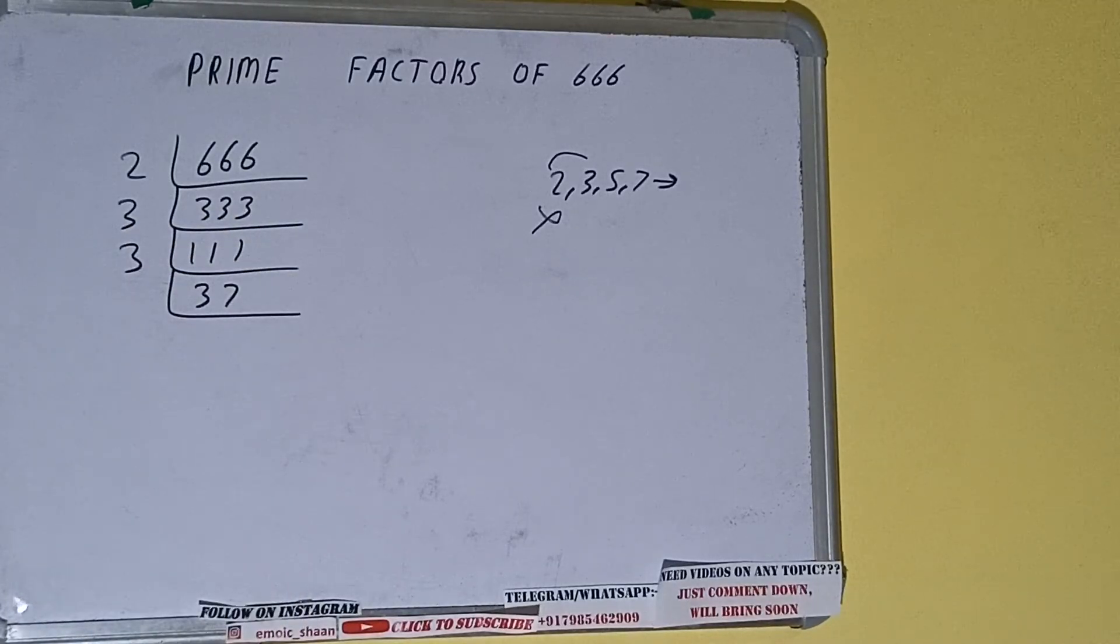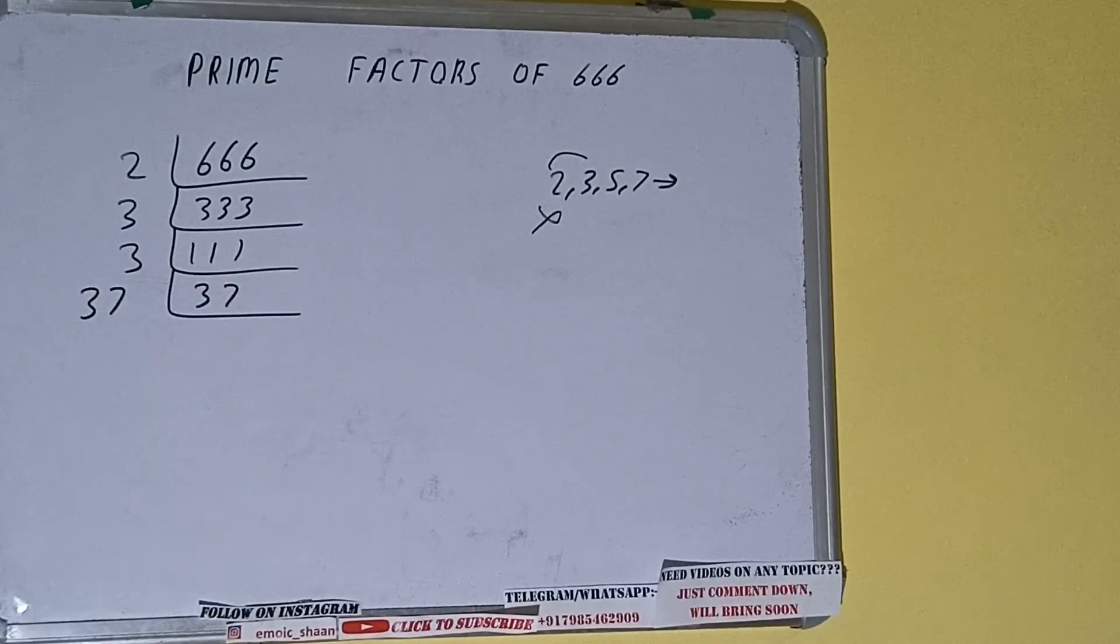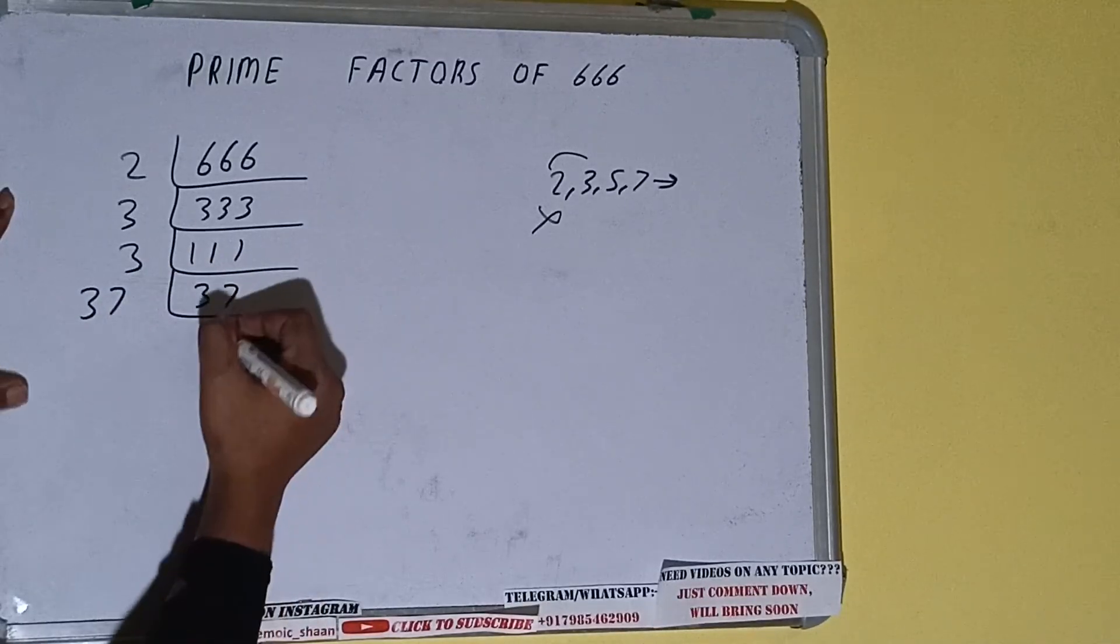And 37 is not divisible by 3 and 37 is also a prime number so it is only divisible by itself that is 37 and once we do so we'll be getting 1.